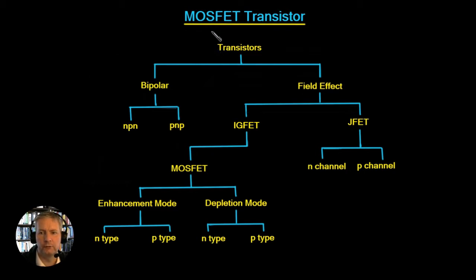Before we get started looking at the MOSFET, let's have a look and see where the MOSFET sits in with the whole pantheon of transistors. So if we've got all of the transistors here, we can split them broadly into two types, the bipolar transistor of which we're going to have an NPN type and a PNP type.